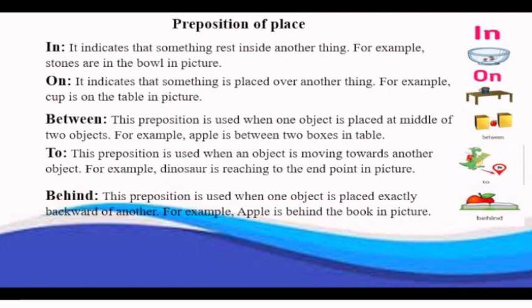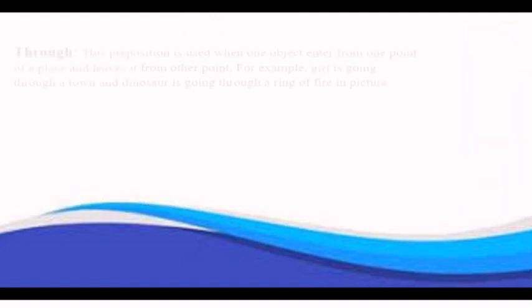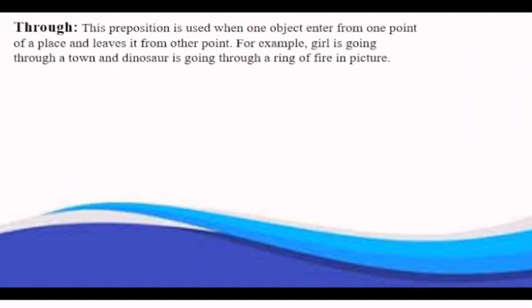Through is used when one object enters from one point, and leaves it from another point. For example, girl is going through a town, and dinosaur is going through a ring of fire, in picture.